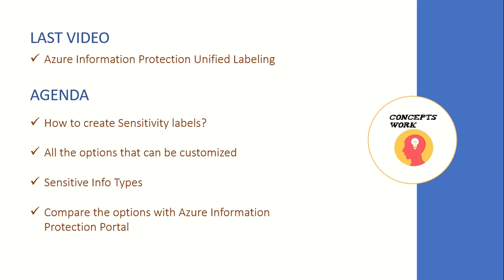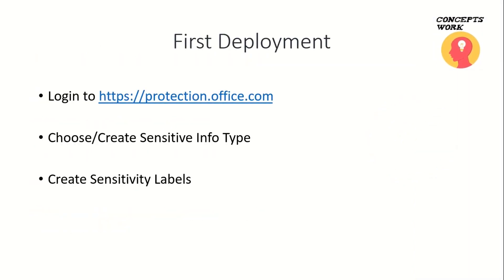If you learn something new from this video please feel free to subscribe. Think about a use case where this is your first deployment — you don't have AIP or you have not set up the classic version of AIP. In this scenario the process is fairly simple: go to protection.office.com, choose or create a specific sensitive info type, map them to sensitivity labels, create a policy, and your unified labeling clients will be able to query those sensitivity labels.